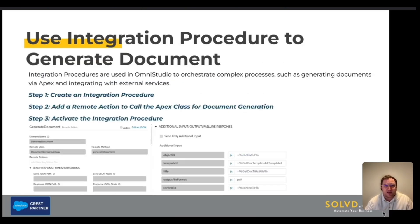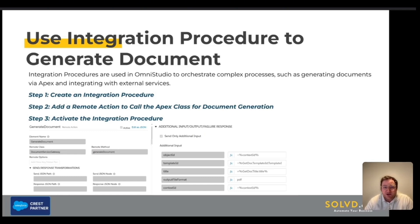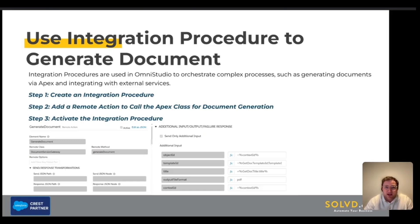Another crucial part of the setup are integration procedures. Integration procedures are used in OmniStudio to orchestrate complex processes such as generating documents via Apex and integrating with external services. Step one: create an integration procedure — in Salesforce Setup, go to OmniStudio Integration Procedures and click New. Step two: add a remote action to call the Document Service Gateway Apex class, passing the necessary parameters to the Apex method as shown in the screenshot. Step three: activate the integration procedure.